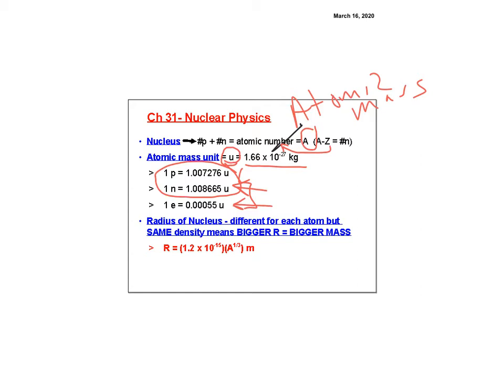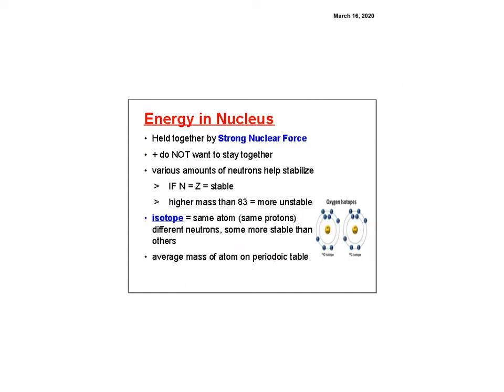The radius of the nucleus is directly related to the atomic mass — that formula is in meters. A bigger mass means a bigger radius. All nuclei have the same density, so bigger mass gives a bigger radius.